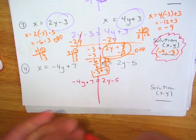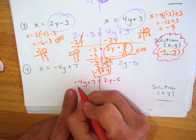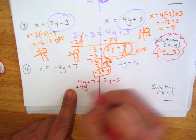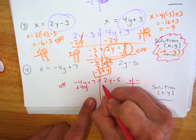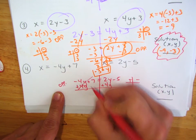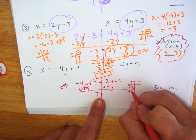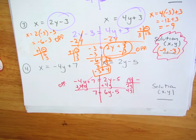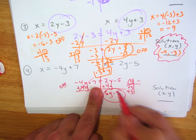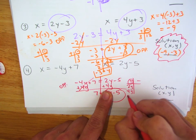Let's take care of the y's — always try to do variables first. I'm going to do the opposite on this side: plus 4y. If I do the opposite here, I do the T-chart over there. So we get 7 equals 2y plus 4y, which is 6y minus 5. Now I need to isolate the variable and get rid of the negative 5 using opposites.